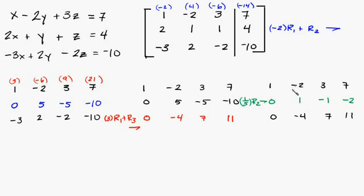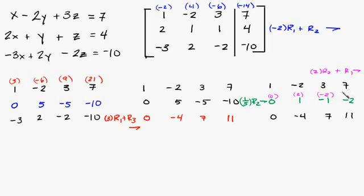Now what we want to do is get a 0 here, then a 0 here. So what we can do is multiply this row times 2 and add it to this row. So 2 times row 2 plus row 1. Row 2 is going to be: 2 times 0 is 0, 2 times 1 is 2, 2 times negative 1 is negative 2, and negative 2 times 2 is negative 4.